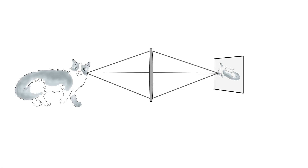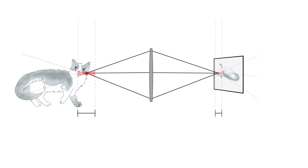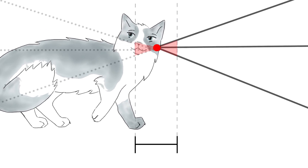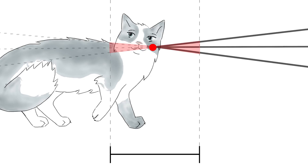To make this easy to understand, we've created this very simple diagram. As you can see, when the light converges and touches the sensor, that is the focus point, and that should create the smallest dot of light possible. Now the depth of field does not mean that everything is perfectly in focus — it just means that it is acceptably in focus. As you can see, as the light converges more quickly, the depth of field becomes narrower, and as the light converges more slowly, the depth of field becomes deeper.